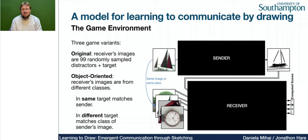In the paper, we explore three different game variants. In the original game variant, we use 99 randomly sampled distractor images plus the target image — a very hard game, nearly impossible for humans. In the object-oriented same game, the images given to the receiver are all of different classes. The target image is the same as the image given to the sender — for example, the class might be boat, and the receiver would have only one boat image, the same one given to the sender.